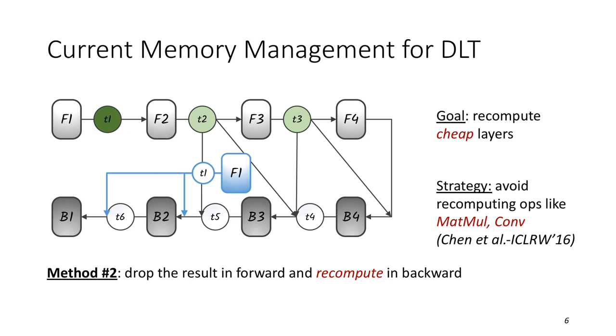The second method is to drop the feature maps in forward propagation and recompute in backward propagation. Here, F1 needs to be computed again to get T1. And in order to reduce recomputation overhead, Chen et al. tries to avoid recomputing operations such as matrix-multiplying convolution layer, but prefer recomputing activation layer and pooling layer.